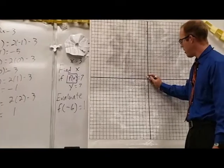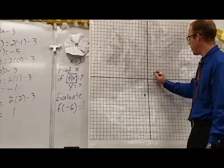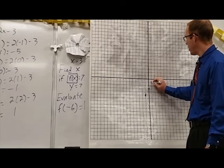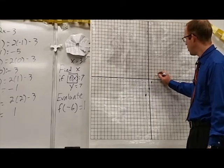So we have -1, -5, that's down here. We have 0, negative 3, 1, negative 1, and 2, 1.